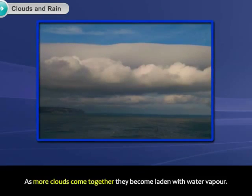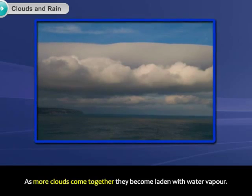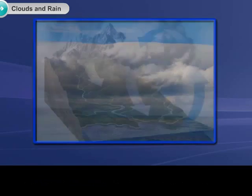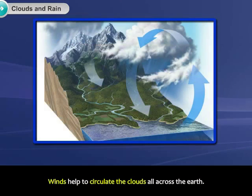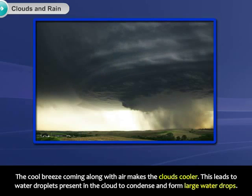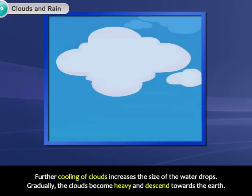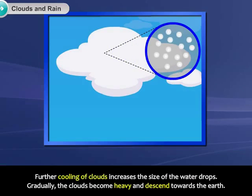As more clouds come together, they become laden with water vapor. Winds help to circulate the clouds all across the earth. The cool breeze coming along with air makes the clouds cooler. This leads to water droplets present in the cloud to condense and form large water drops. Further cooling of clouds increases the size of the water drops.